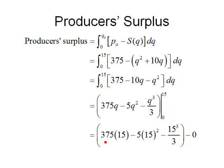When we do that, we get 375(15) - 5(15)² - 15³/3. That's what happens when you put 15 in. When you put 0 into the antiderivative, you get 0. Doing the arithmetic gives us $3,375. So if the producer receives the equilibrium price, they're going to get $3,375 more than if they simply received the price along the supply curve.